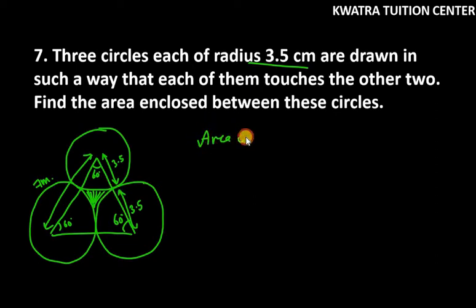Let's find the area of the equilateral triangle first. The formula is √3/4 × a². In this case, a is 7. Don't take 3.5 because the total length equals the total side. When you solve this,